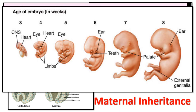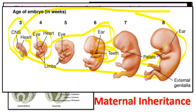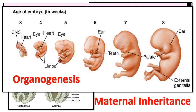In humans, after about three weeks the embryo develops a central nervous system and the heart starts to beat. After four weeks, eyes, limbs, and ears begin forming. After six weeks, teeth appear. After eight weeks the palate begins to form. Throughout these first eight weeks we are undergoing organogenesis — the liver, kidneys, and other organs are all developing.